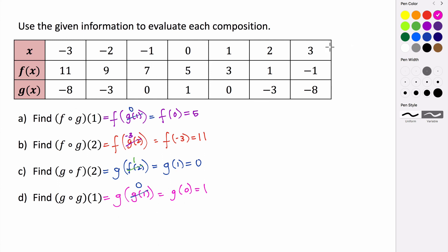This table clearly does not show all possible values, because if we wanted to evaluate g of f of negative 3, we'd evaluate f at negative 3 and get 11, which means 11 would have to be the new input for g — but 11 is not listed as an input. We would have to extend the table or know the actual functions. Most of the time, your answers will be restricted to values within this table, so just keep that in mind.